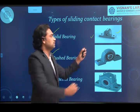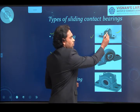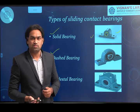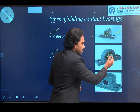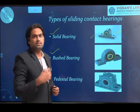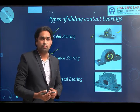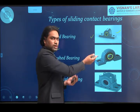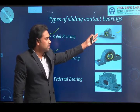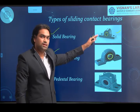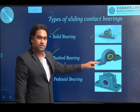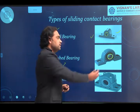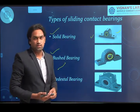In the bushed bearing, inside the hole provided in the solid bearing, we introduce a bearing liner made of brass or bronze. If there is a chance of wear, we can simply change the bearing liner instead of replacing the entire bearing. In the solid bearing, if wear occurs, you need to replace the complete bearing; but in the bushed type, you simply replace the bearing liner.